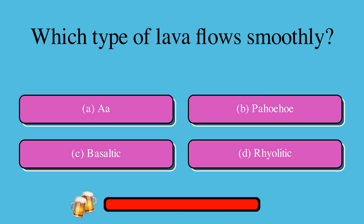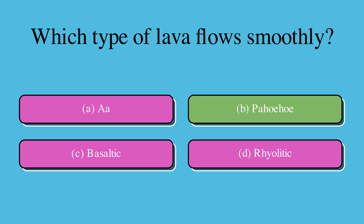Which type of lava flows smoothly? A. A'a, or B. Pahoehoe, or C. Basaltic, or D. Rhyolitic? The correct answer is B. Pahoehoe.